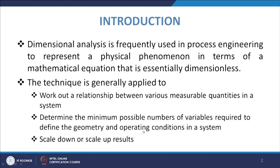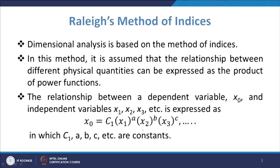The first method used for such an approach is Rayleigh's method of indices. Rayleigh's method says that the relationship between different physical quantities can be expressed as the product of power functions. So you have x₀ as the dependent variable expressed as c₁ · x₁^a · x₂^b · x₃^c and so on.